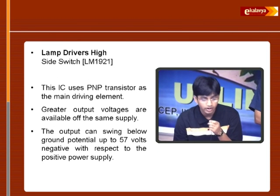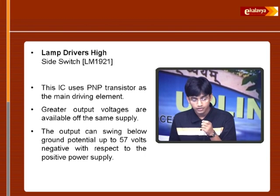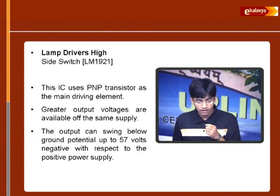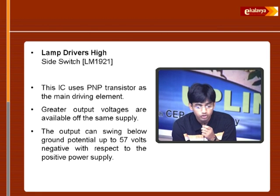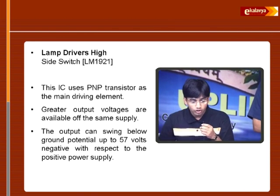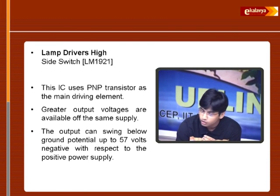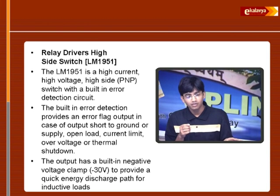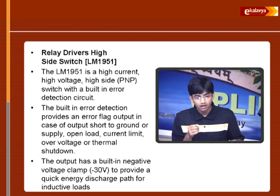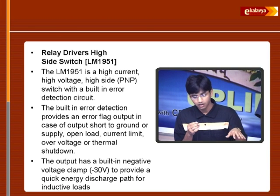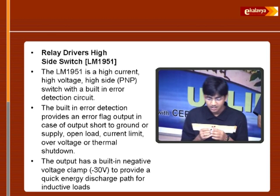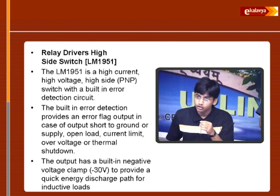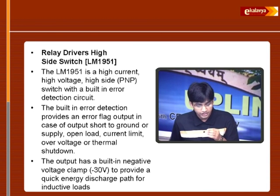The lamp driver high-side switch LM1921 uses a PNP transistor as the main driving component. It has a large range of output voltage so the system works safely for most cases, but in case of any failure the output can swing below the ground potential — below 57 volts negative with respect to the power supply. The LM195 relay drivers are high-side switches used mainly for failure purposes. If there is a failure such as open load, short circuit, thermal breakdown, or over-current or over-voltage, output pin 4 sends an error flag back to the comparator microcontroller so it can process the necessary response for proper system operation.